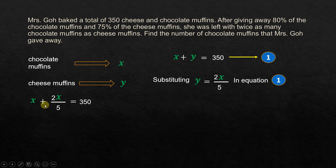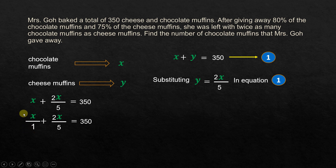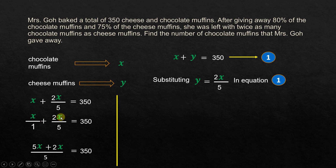Substituting Y equals 2X over 5 into X plus Y equals 350, we get X plus 2X over 5 equals 350. Finding the LCM of 1 and 5, we multiply: 5X over 5 plus 2X over 5 equals 350, which becomes 5X plus 2X over 5 equals 350. Bringing the 5 over gives 7X equals 350 times 5, which is 1750. So X equals 1750 divided by 7, giving X equals 250.